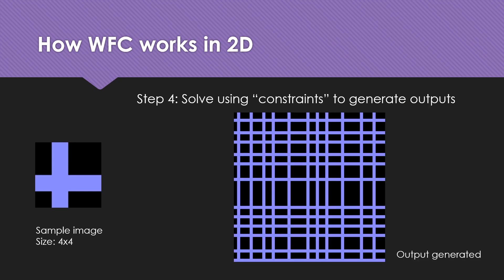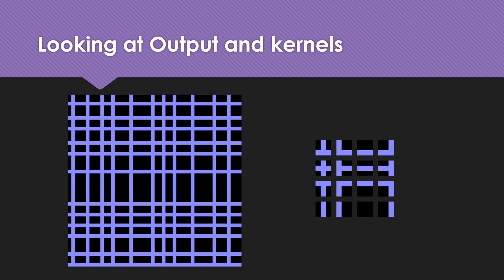We use these kernels as constraints to generate an output. It is interesting to note that in this output, every kernel-sized region in the output image maps perfectly to a kernel observed from the input. This holds true for all kernel-sized regions in the output image.